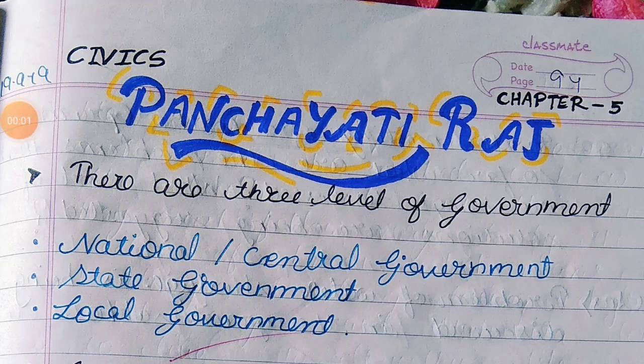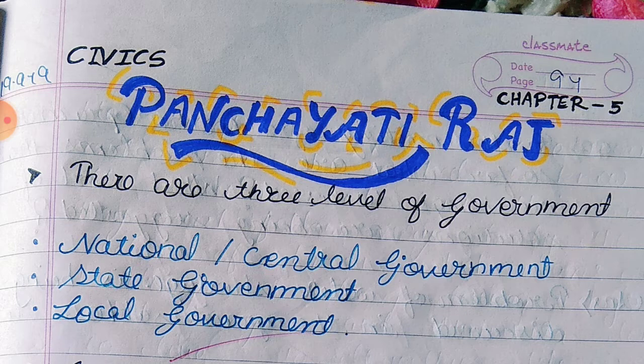Class 6 Civics Chapter 5: Panchayati Raj Notes. There are three levels of government: 1. National or Central Government, 2. State Government, 3. Local Government.